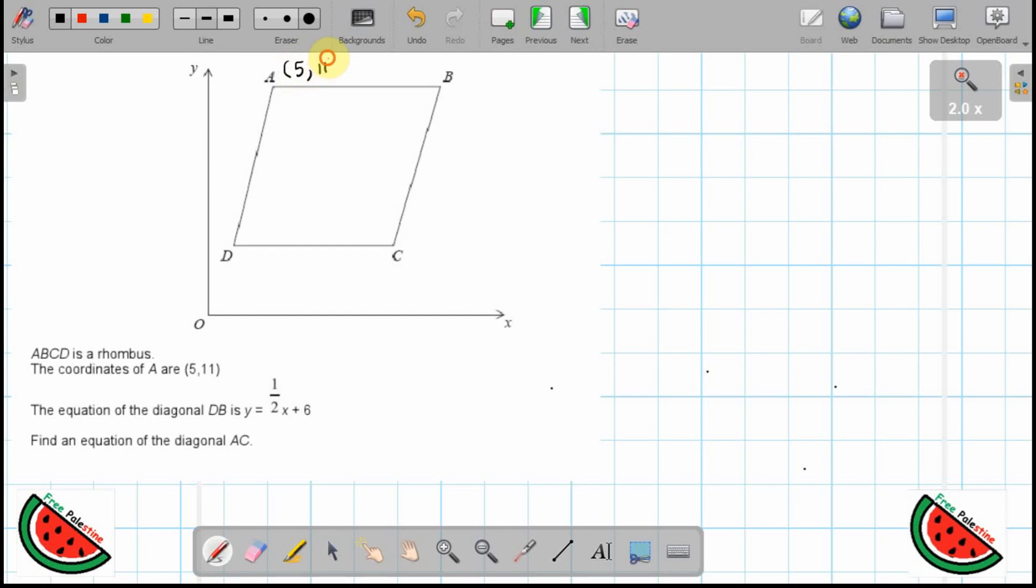The equation of the diagonal DB, so let's connect D and B. DB is like so. The equation of this is y equals half x plus 6, so I'll just write that there. Y equals half x is the same as x over 2 plus 6.